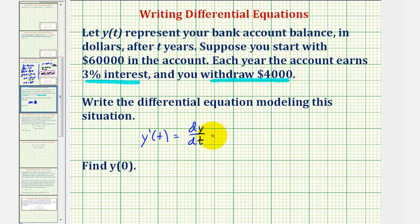So we can say dy/dt equals 0.03 times y. But because you also withdraw $4,000 per year, we subtract 4,000. So dy/dt equals 0.03y minus 4,000. This measures the change in the account balance per unit of time, where time is in years.